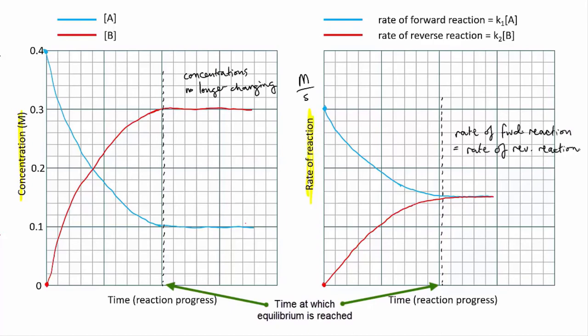But although the concentrations aren't changing anymore of A and B, they also don't have to be equal. Remember that for this hypothetical reaction, we needed a three times higher concentration of B to get the rates to be equal. So at equilibrium, the concentration of B will be three times the concentration of A.